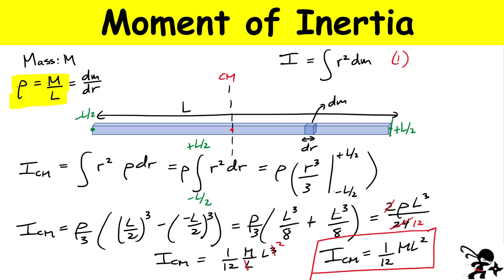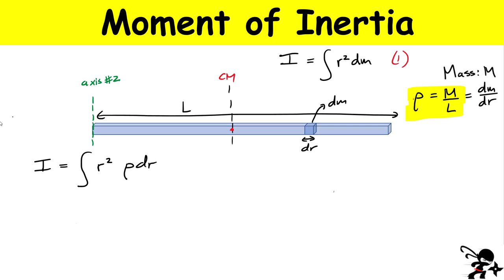Now let's go to a different case. What if I move the rotation axis all the way to the edge of the beam? Here's case number two — same beam, same mass, same density. The only thing that changes is I move the axis to the edge. Now the masses can be much farther from the axis; the element at the far edge is a total distance L away. So the limits of integration change — I'm now integrating all masses from zero all the way to L.